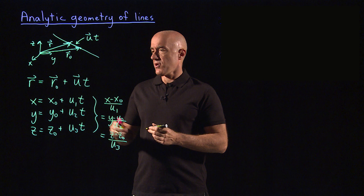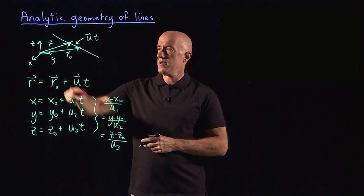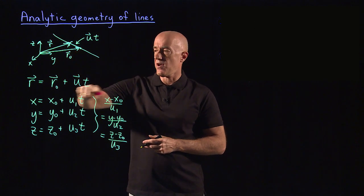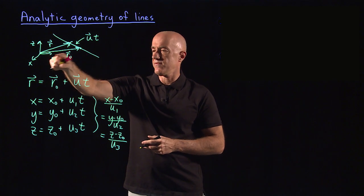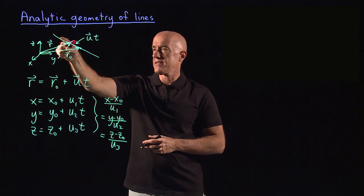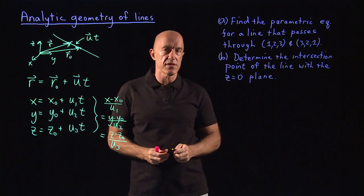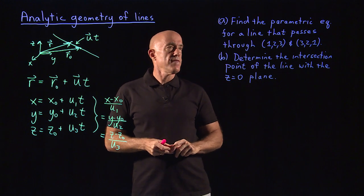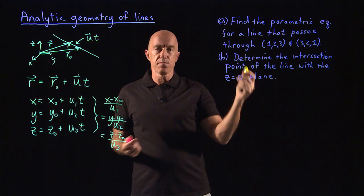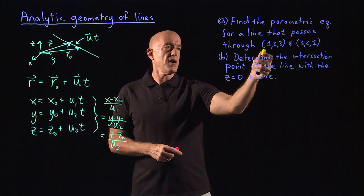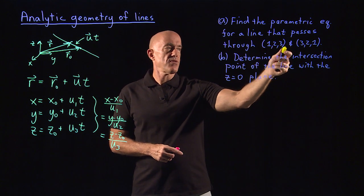So let's use this model: the parametric form for a line in three-dimensional space is easy to remember. The position vector equals the initial position vector plus the velocity vector times time. Let's solve this problem written on the lightboard: find the parametric equation for a line that passes through two points with coordinates (1, 2, 3) and (3, 2, 1).